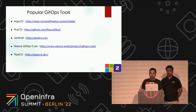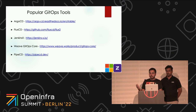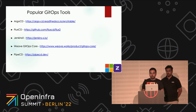Here are some of the popular open-source GitOps tools: Argo CD, Flux, Jenkins, Weave GitOps, Pipe CD, and many more. In this talk, Uday is going to specifically focus on Argo CD, talk about its architecture, and provide a demo. Then I'll talk about some of the challenges and comparisons. So I'll hand it over to Uday.